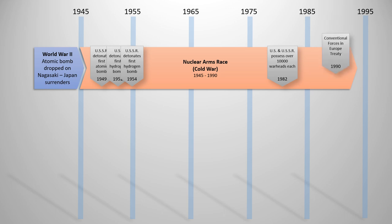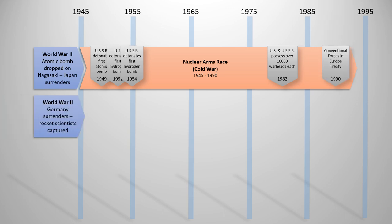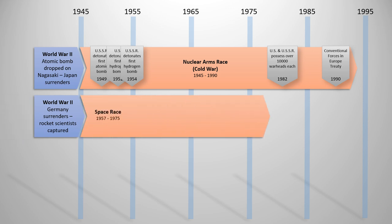Another factor in World War II: when Germany surrendered, they had quite a few scientists working on rocket technology. Germany had developed the most advanced rocket technology of the century, and their scientists were sought by both the United States and Soviet Russia. When Germany surrendered — attacked from two sides, Russia from one and the Allied troops from the other — both countries captured these rocket scientists.